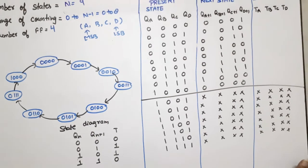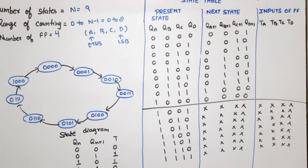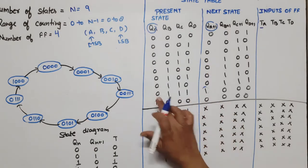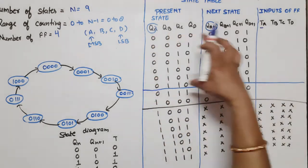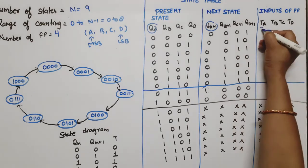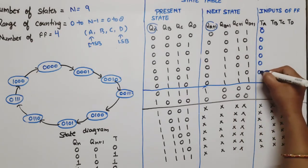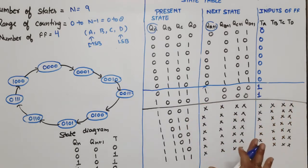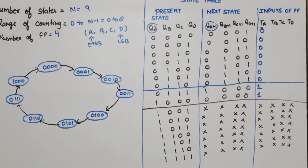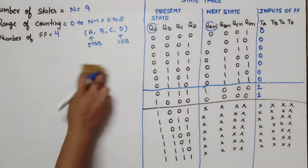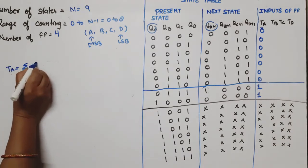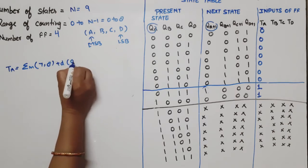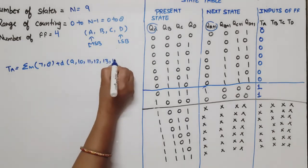Now we write TA, TB, TC, and TD values one by one. For TA, we consider QA and QA_next. Where QA and QA_next are the same, TA is 0. Where they change, TA is 1. The TA equation is the summation of minterms at positions 1, 7, 8, plus don't-cares at 9, 10, 11, 12, 13, 14, and 15.